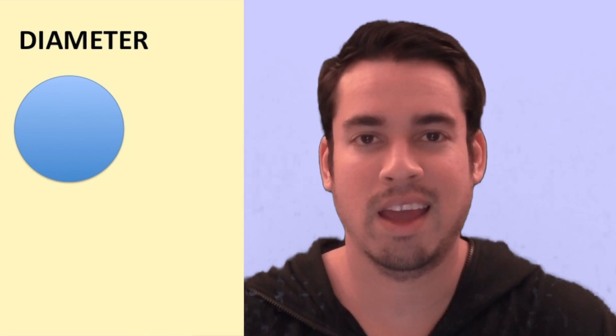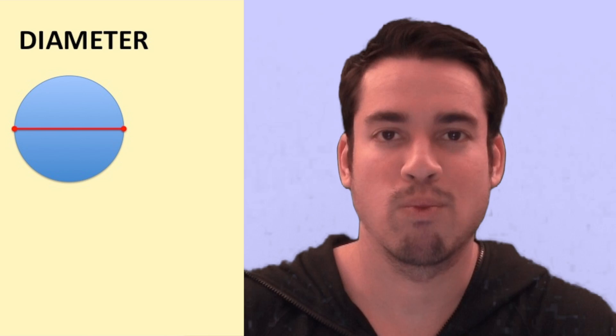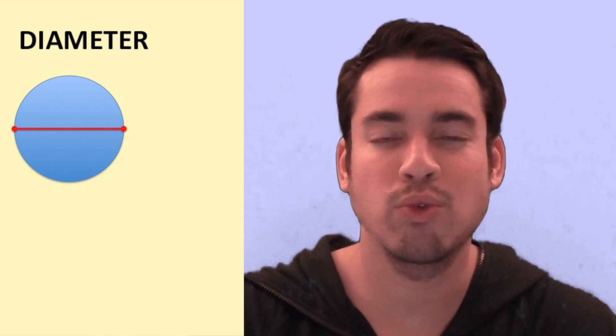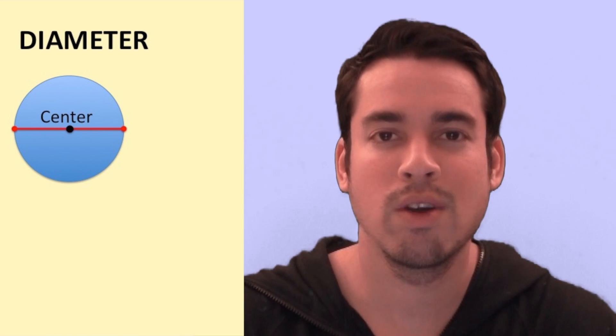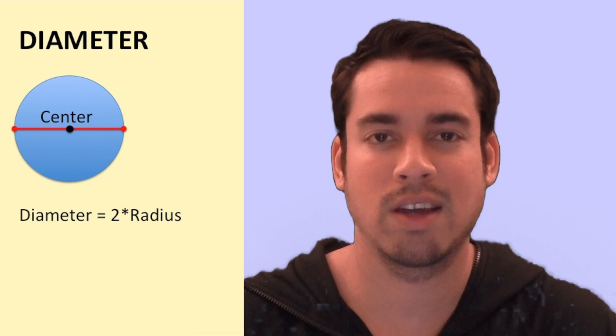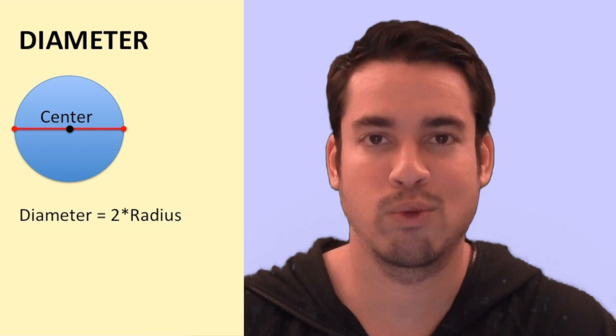The next definition you need to know is for diameter. Diameter is simply a line segment that goes from one edge of the circle all the way to the other edge, but that goes through the center. So it's basically the radius times two. The diameter is always twice the length of the radius.